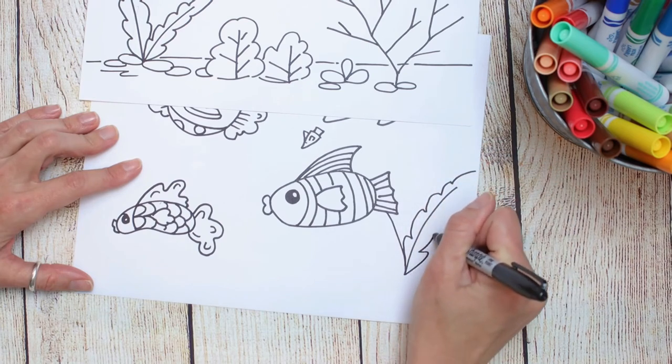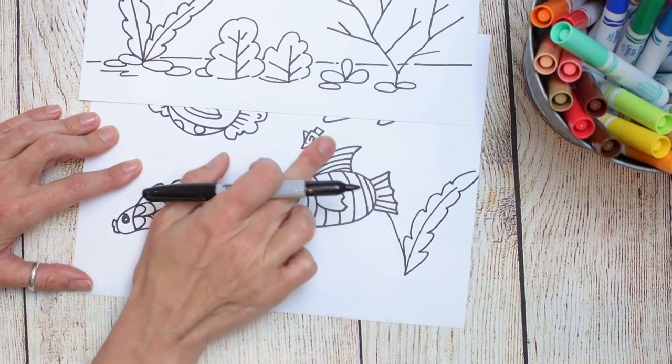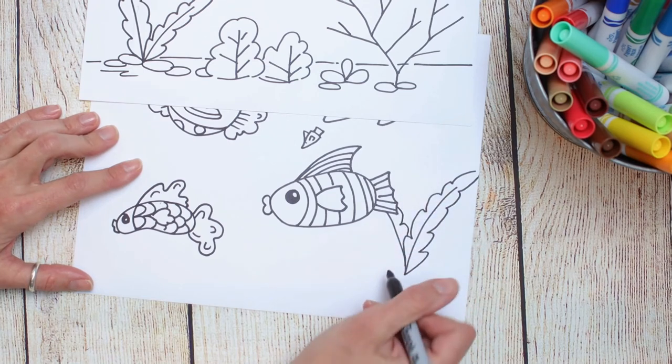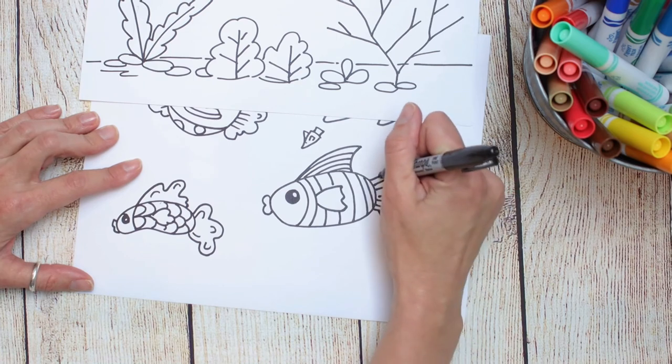So the plants are in the background. The fish are closer to you. So they're in the foreground in front of the plants. So go ahead and just let it look like it goes right behind it and accommodate your drawing. Just stop right when you get to the fish or to whatever object is in the front.